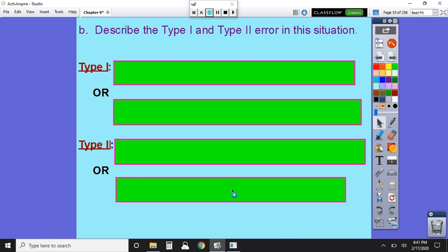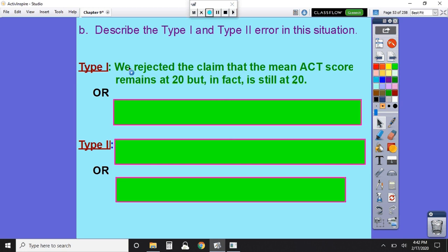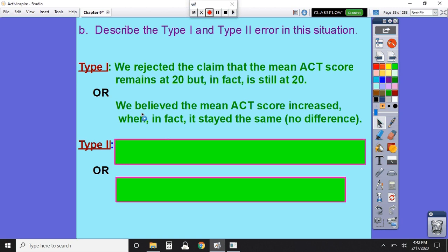So describe a type 1 and type 2 error in this situation. All right, so our type 1 error, remember, that's when we reject the null hypothesis, but we really shouldn't have. So one way to put it is that we reject the claim that the mean is 20, but really it's still 20. So we think that this program has helped out, when in fact it hasn't helped out. So that's what I've got here. We believe the mean ACT score increased when in fact it stayed the same, that there was really no difference in these kids taking this prep course or not taking this prep course.